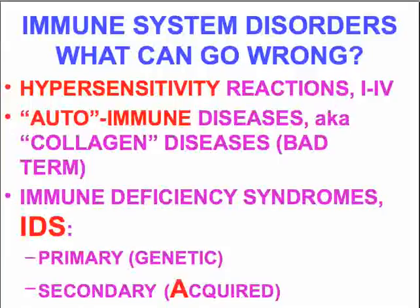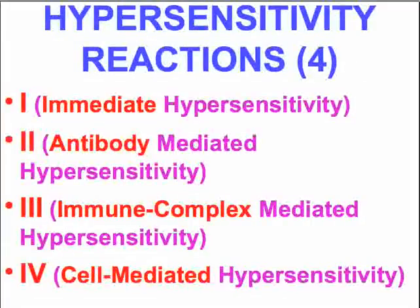Let's talk about the classic four types of hypersensitivity reactions. Type one is generally known as immediate hypersensitivity or an acute allergic reaction. Type two is antibody-mediated hypersensitivity, where antibodies attack surfaces of cells, sometimes fixing complement. Type three is immune complex hypersensitivity, with floating immune complexes of antigens and antibodies depositing in areas — often the glomerular basement membrane or synovial cells — to cause damage. Type four is cell-mediated hypersensitivity, classically seen as a skin reaction to tuberculosis.